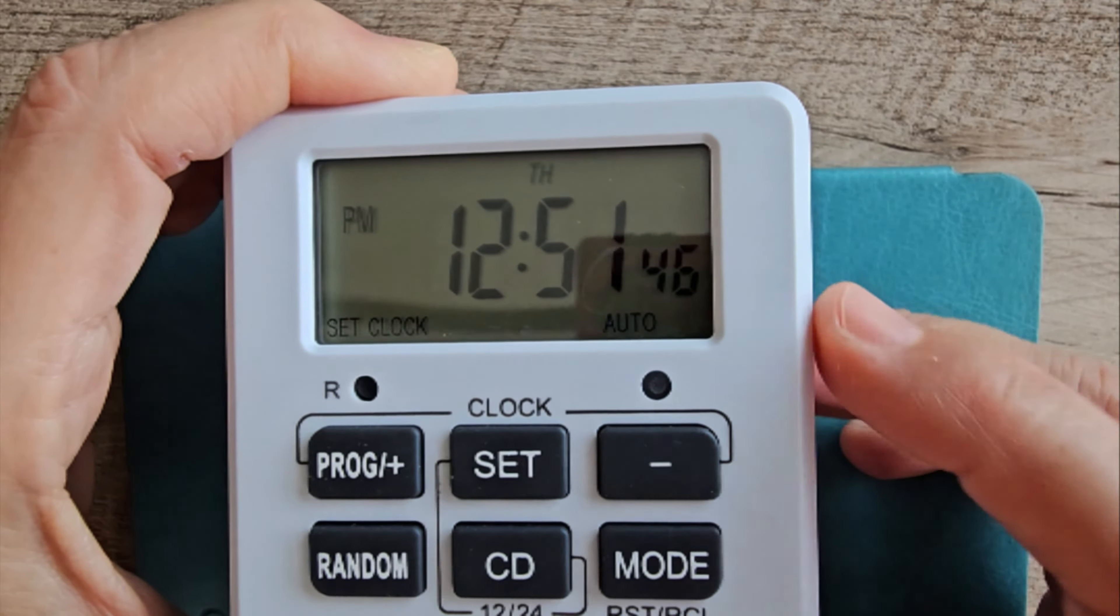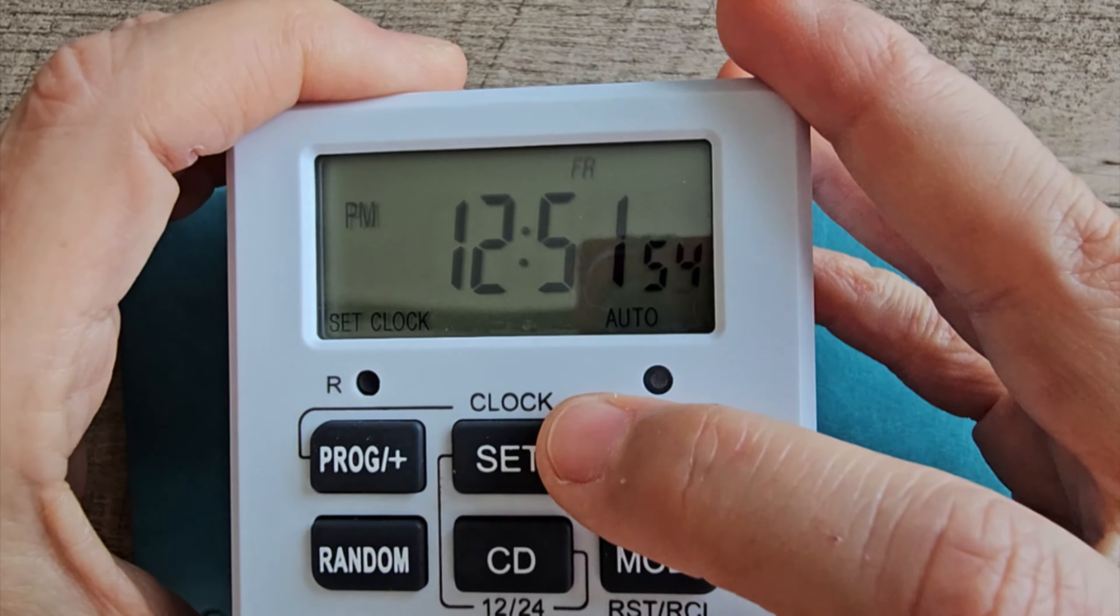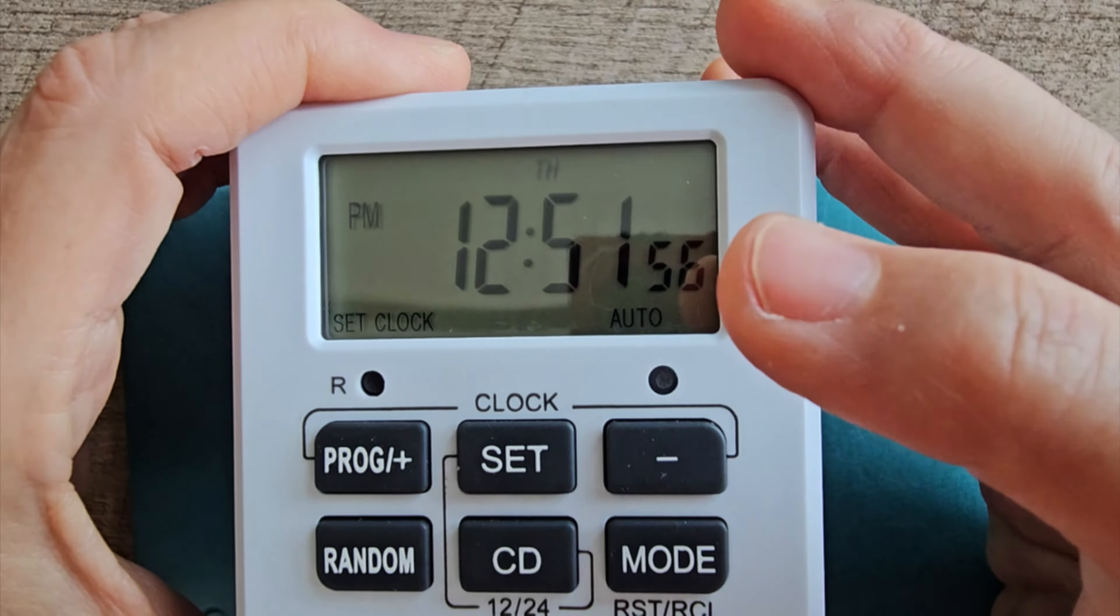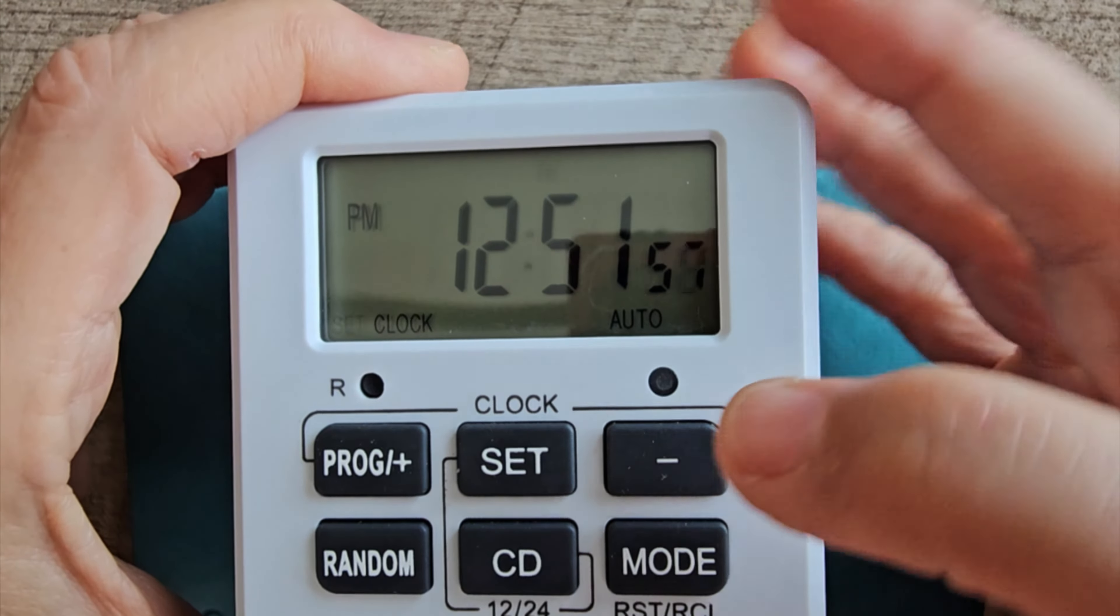First, let's set the time. Under the word clock, hold and press the set button for about two seconds, and you see the day is flashing. There, the day is flashing, Thursday.